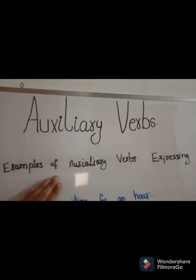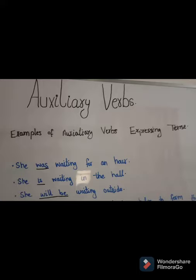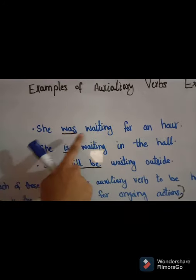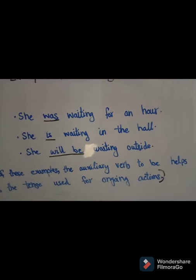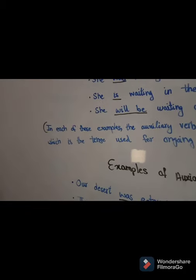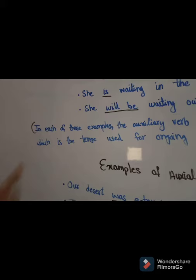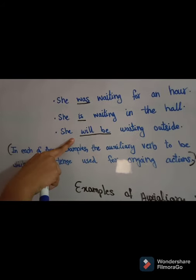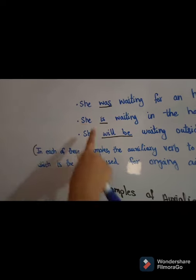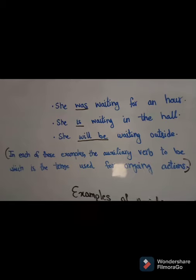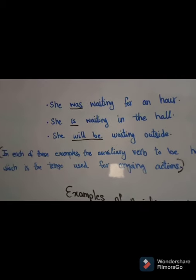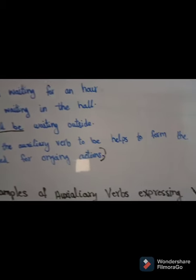Examples of auxiliary verbs expressing tense — three examples: 'She was waiting for an hour.' 'She is waiting in the hall.' 'She will be waiting outside.' These represent past, present, and future respectively. In each of these three sentences, the auxiliary verb 'to be' helps to form the progressive tense, which is the tense used for ongoing actions.